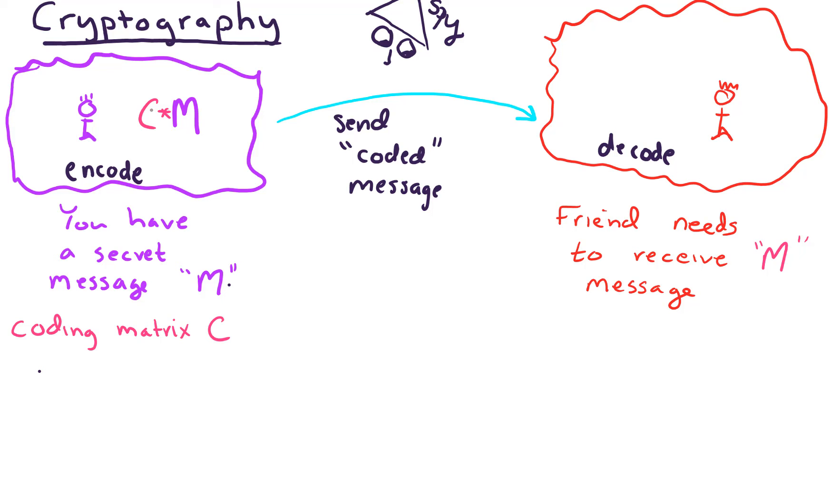And what we'll do is multiply C times M, and that's what we send out across our lines of communication. That's our coded message, and it looks like a matrix that's hard to decipher, which is really good because we have this spy that's watching our communications.